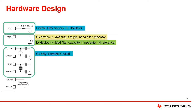Next is the V reference plus pin. For MSP M0 G series, this pin will output the internal reference voltage, so it is recommended to place a filter capacitor. If the external reference voltage is supplied, a 1 microfarad filter capacitor is also recommended. For MSP M0 L series, the V reference plus pin is only used for external reference voltage input, so the filter capacitor is only required if using an external reference voltage supply.